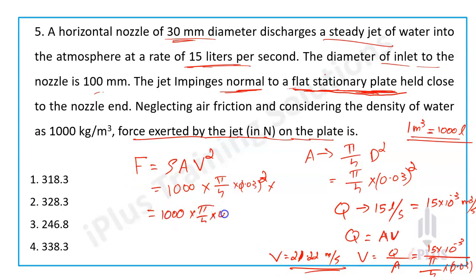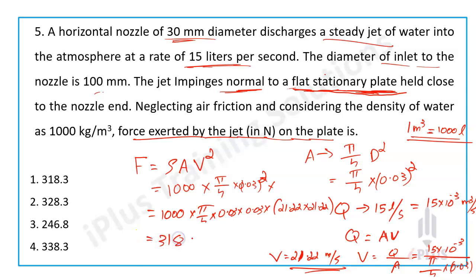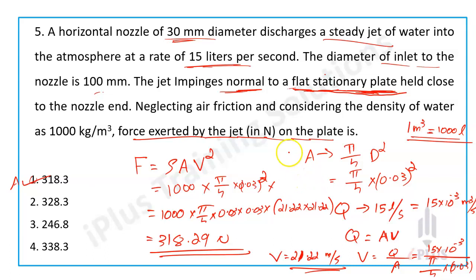Substituting into F equals rho A V squared: 1000 times pi by 4 times 0.03 squared times 21.22 squared gives the force as approximately 318.3 Newtons. So the answer is option A: 318.3 Newtons.